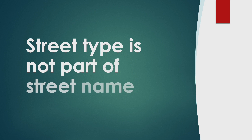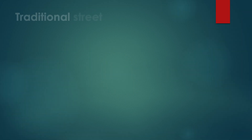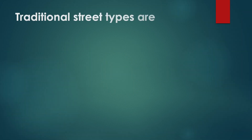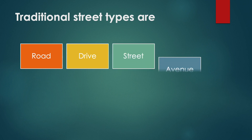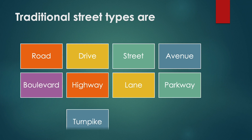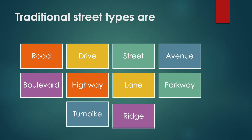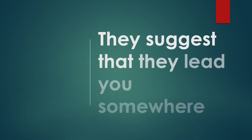Street type is not part of the street name. Street types. Recognized street types include road, drive, street, avenue, boulevard, highway, lane, parkway, turnpike, and ridge. These suggest that they lead you somewhere.